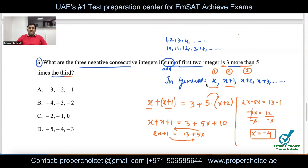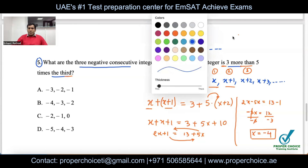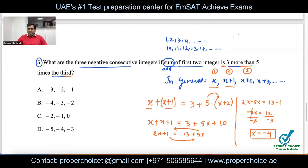Since consecutive integers follow the pattern x, x+1, x+2: if the first number is −4, the second is −4 + 1 = −3.